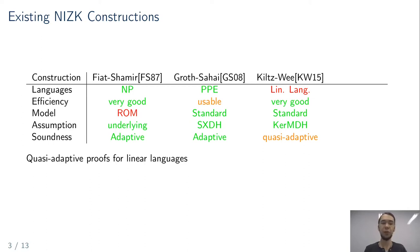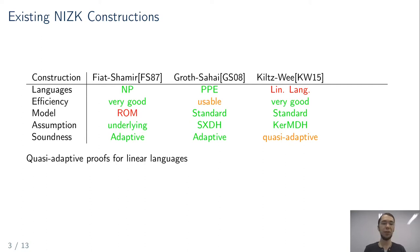So why do we need another framework for non-interactive zero-knowledge? All constructions shown have some drawback: Fiat-Shamir requires the random oracle model; Groth-Sahai proofs are quite inefficient compared to Fiat-Shamir; and the Kiltz-Wee proofs, although very efficient, only work for linear languages with quasi-adaptive soundness. The question is: can we find something as efficient as Fiat-Shamir, secure in the standard model under a standard assumption, with adaptive soundness, for a larger class than linear languages? The answer is partially yes.